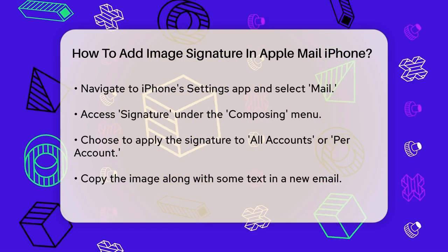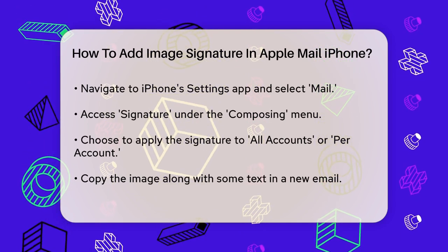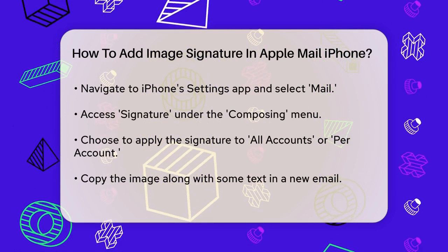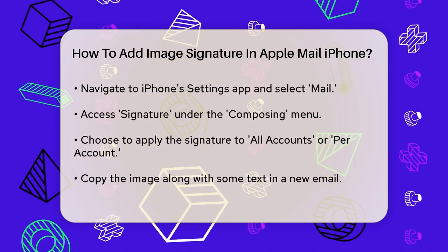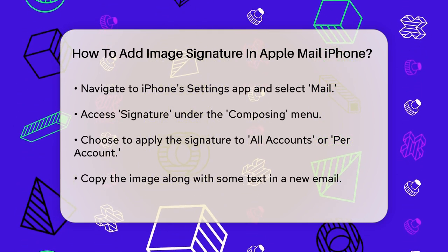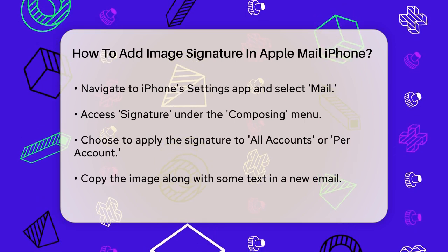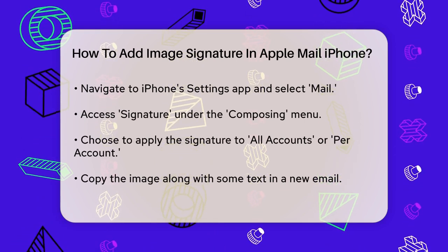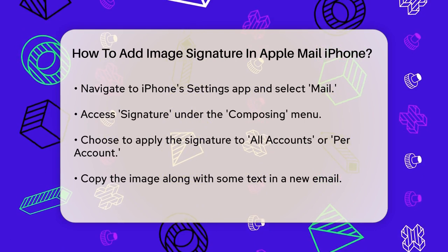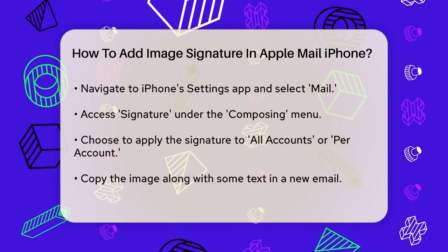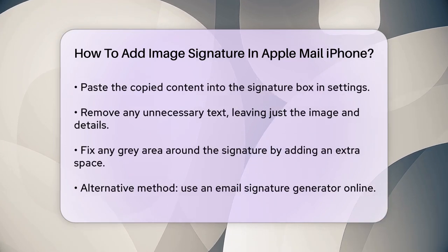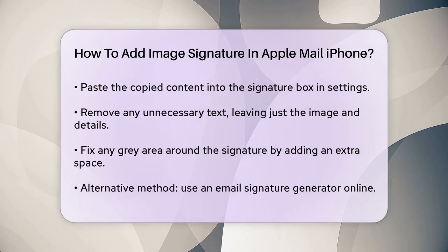Now to add the image, you can't simply copy and paste the image alone. Instead, you need to copy the image along with some text. Open the Mail app, create a new email, and add the image to the body of the email along with some text. Select all the content in the email body and copy it. Go back to the Signature settings, tap and hold in the Signature box, and select Paste. This will add the image along with the text to your signature.